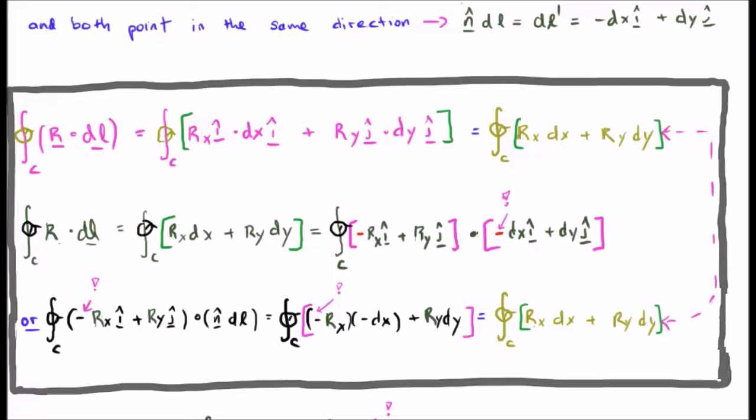Now, we saw up here that minus DX i hat plus DY j hat can be rewritten as N hat DL. So, I'm going to plug in N hat DL down here.